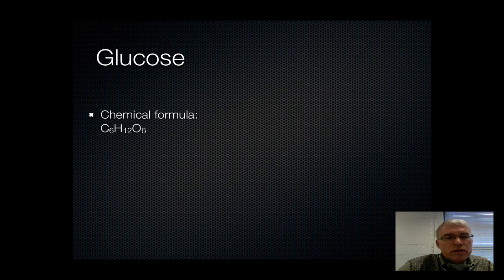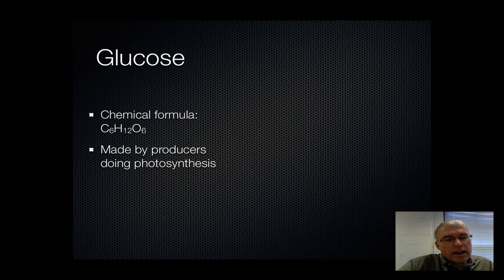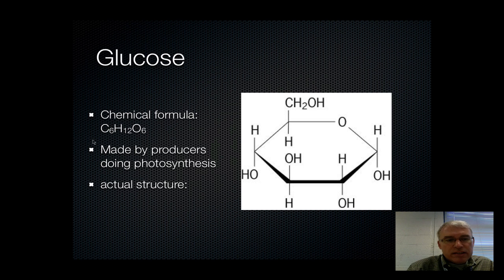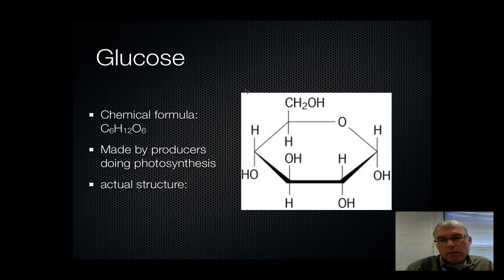Let's look more closely at glucose. You already should know the chemical formula for glucose: C6H12O6. Plants produce glucose as part of photosynthesis. The actual structure of glucose is based on a hexagon with six carbons — there's a carbon at the top and everywhere there's a corner in the hexagon there is another carbon. Counting them: one, two, three, four, five, six carbons — that gives us the C6. If you count the H's and the O's, you'll come up with the other numbers. That's the shape of the molecule you should be familiar with — what glucose looks like.